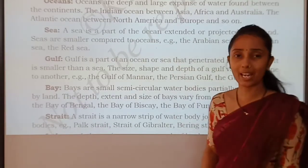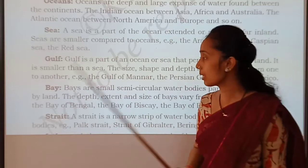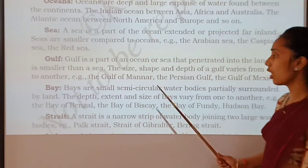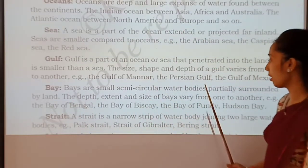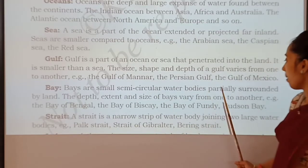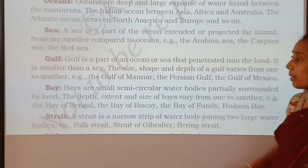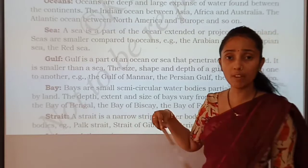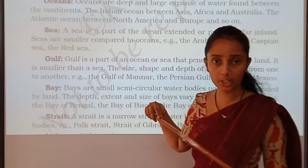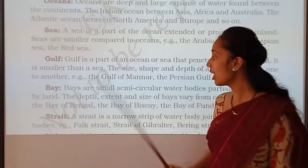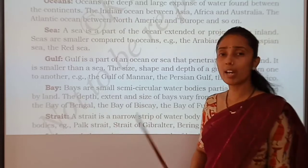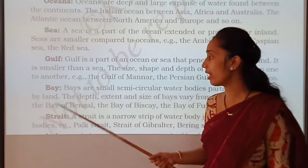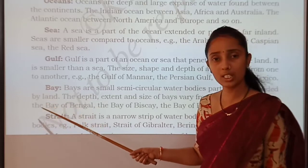Then, what do you mean by bay? Bays are very small, semi-circular water bodies partially surrounded by land. It is a semi-circular shape where only a very small part of land is visible.